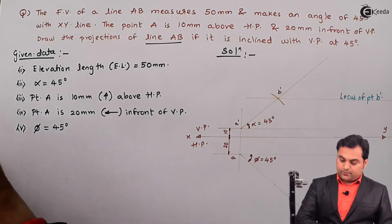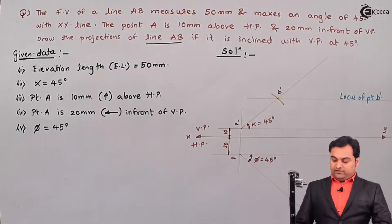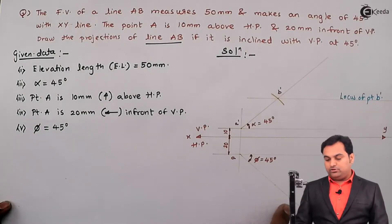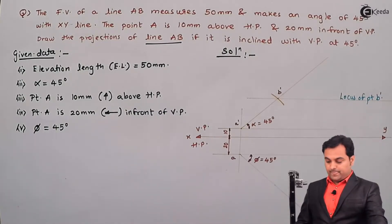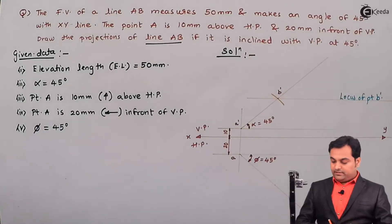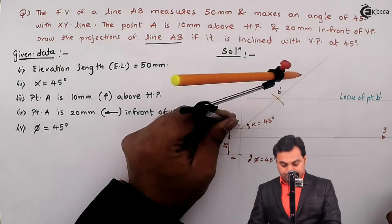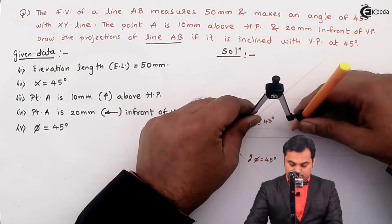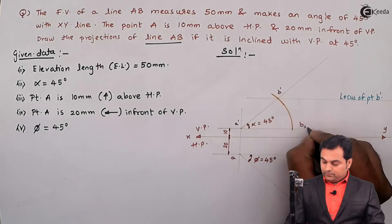In this problem the true length of the line is not given. If the true length had been given, I would have taken that distance, kept it on point A, and marked it on this inclined line. But since the true length is not given, we need to find it. The procedure is: first make A dash B dash — which is inclined in the front view — parallel to XY. This gives point B2 dash.